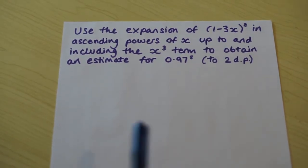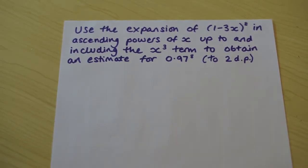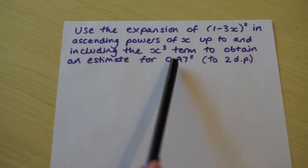So on the piece of paper is the question that we're going to be doing together. We're going to be expanding that bracket to estimate that.